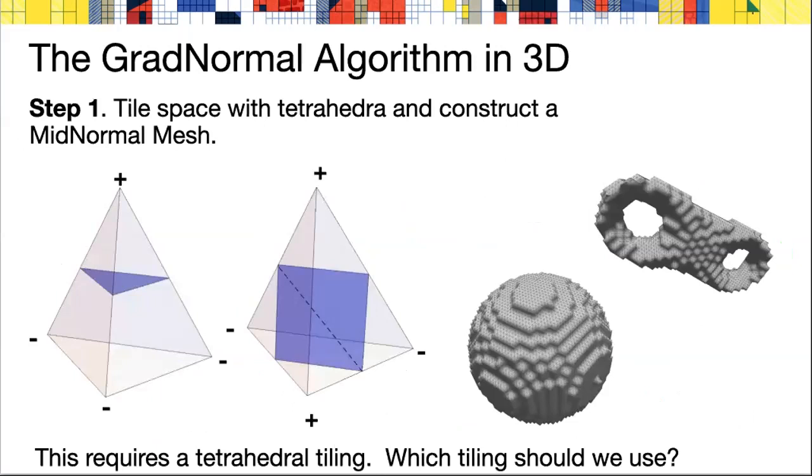Let's do that now. We're going to do the analogous process. We're going to tile space, not with triangles, but with tetrahedra. At step one, we construct this midnormal mesh. We're going to look at how the surface separates the vertices of the tetrahedra and construct triangles that do the same.